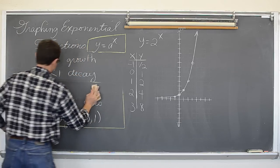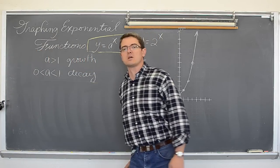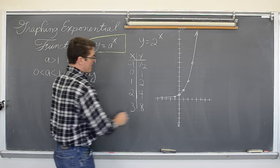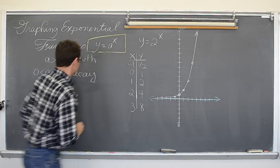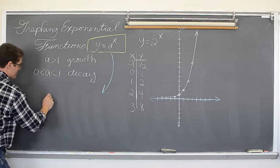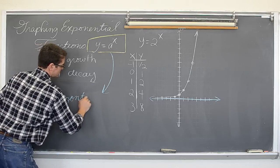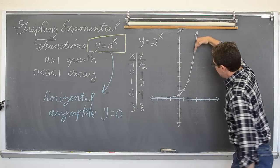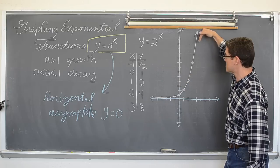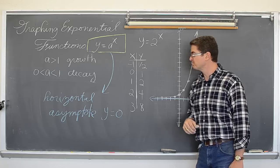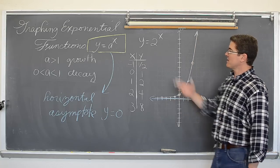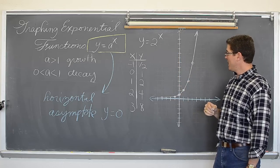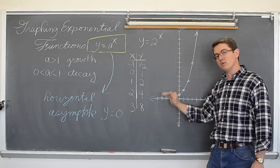Let's talk about horizontal asymptotes. All exponential growth and decay problems do have a horizontal asymptote. In this most basic form of y equals a to the x — growth or decay — they are all going to have a horizontal asymptote of y equals zero, because this graph comes down and approaches the y value of zero, approaching the x axis as x goes to negative infinity. Either growth or decay, they all pass through zero, one and all have a horizontal asymptote of y equals zero, until there has been a vertical shift.